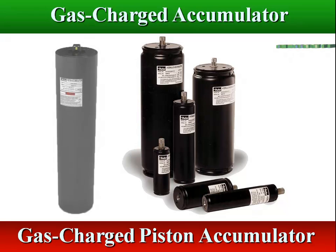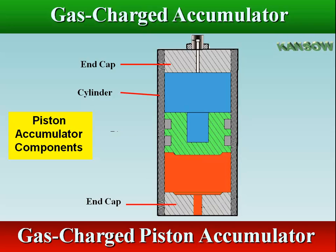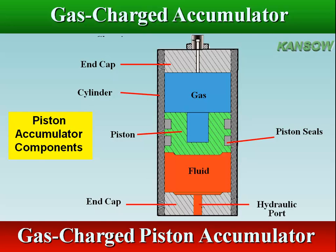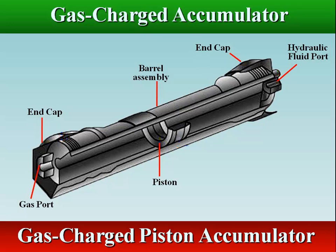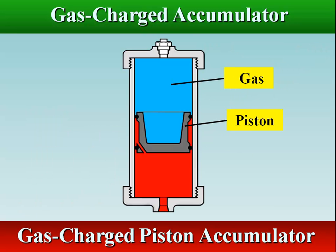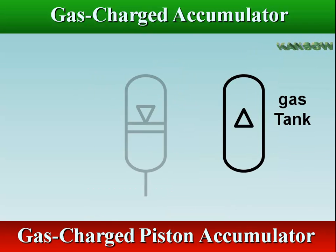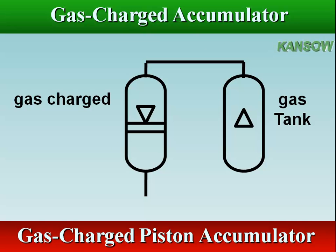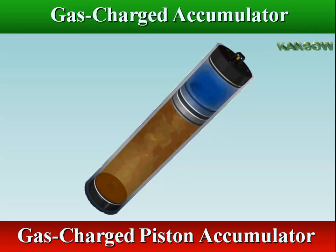Piston type accumulator consists of a cylinder assembly, a piston assembly, and two end cap assemblies. An accumulator contains a free-floating piston with fluid on one side of the piston and pre-charged nitrogen on the other side. An increase of fluid volume decreases the gas volume and increases gas pressure, which provides a work potential when the fluid is allowed to discharge.